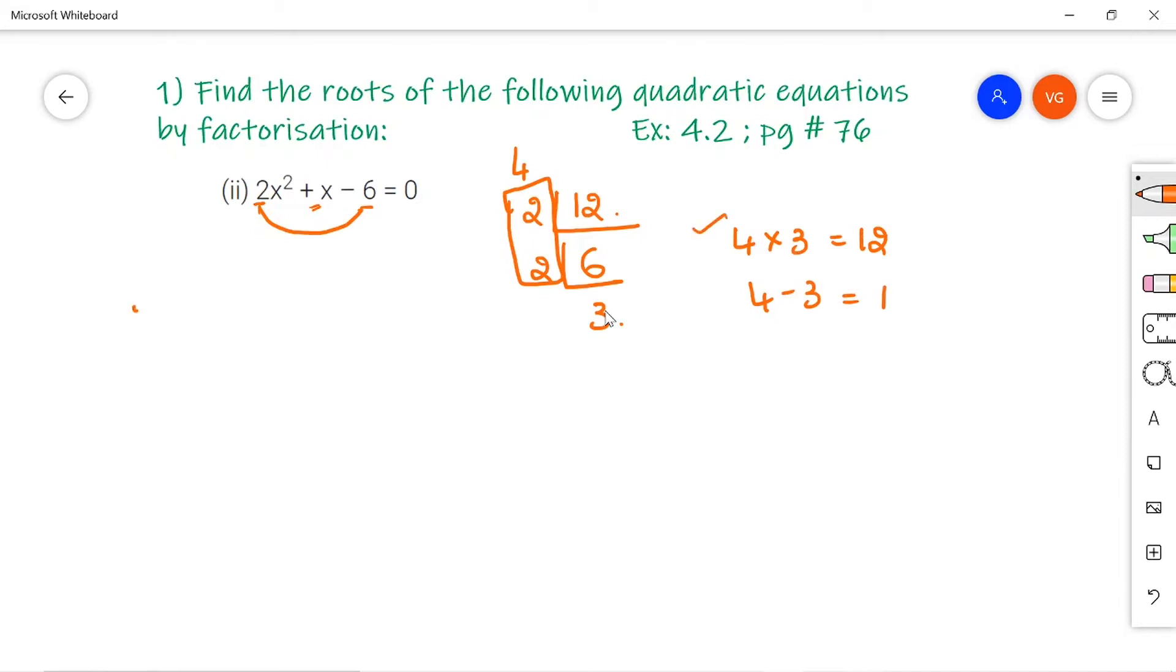Let us write this. 2x² plus 4x minus 3x, that is nothing but this plus x. I have split it as plus 4x and minus 3x, right? So, minus 6 = 0.